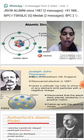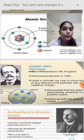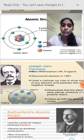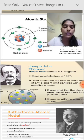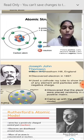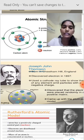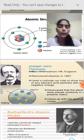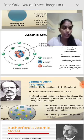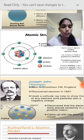Protons are positively charged and have a mass of one atomic mass unit (amu). Neutrons are neutral and also have a mass of one amu. Electrons are negatively charged and have a mass of zero amu. The electron is denoted by a negative charge and the proton is denoted by a positive charge.